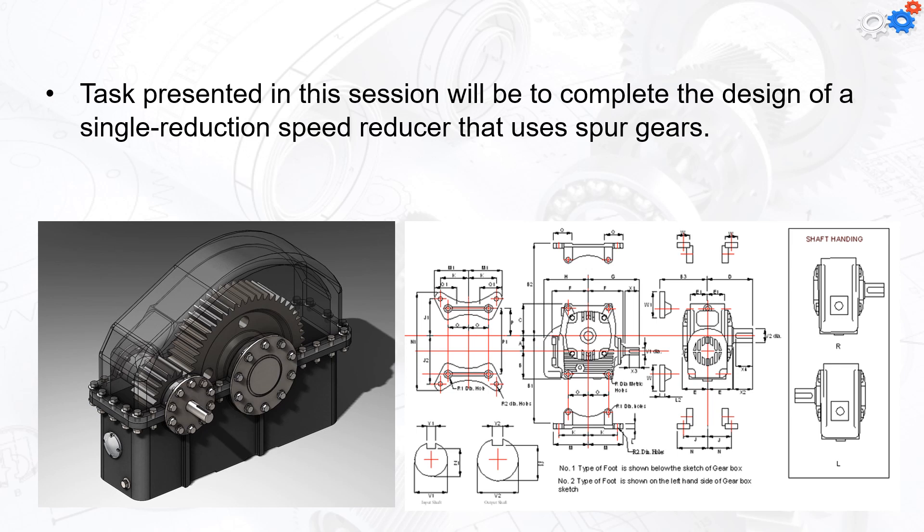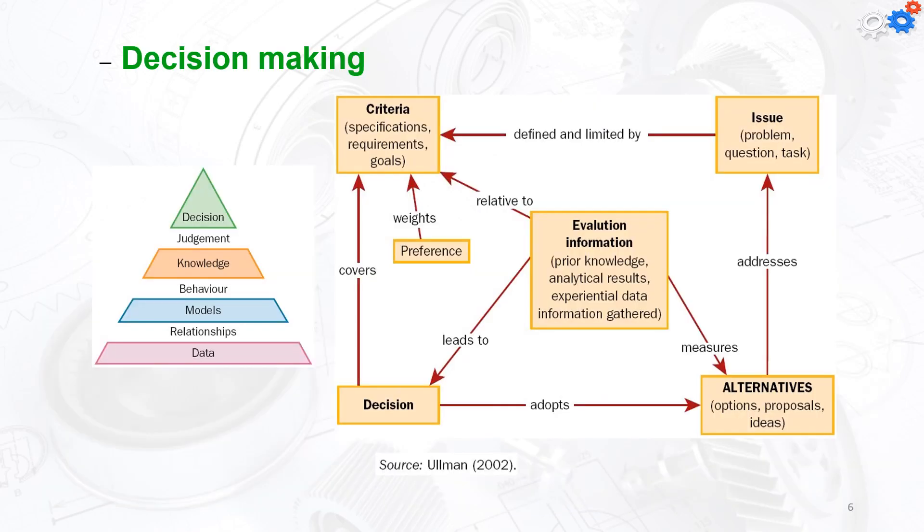The task presented in this session will be to complete the design of a single reduction speed reducer that uses spur gears. The steps presented will be summarized, but the decision-making hierarchy starts by collecting data first, then making relationships between them and creating models.